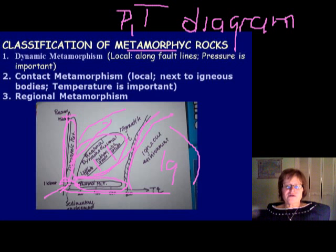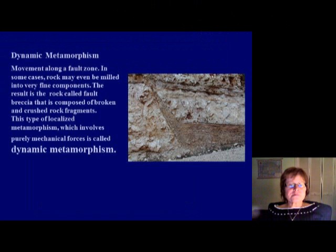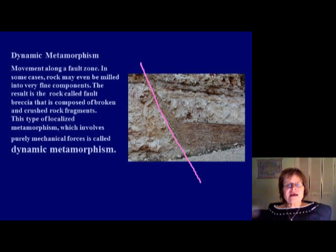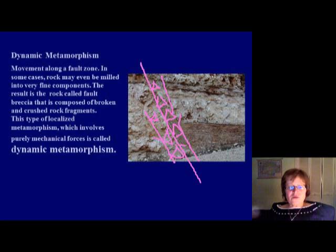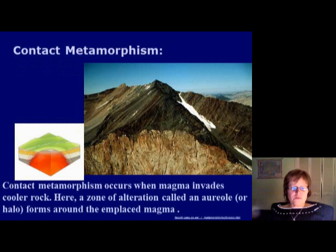Dynamic metamorphism is where only pressure counts; temperature is not important. It usually happens along fault lines, and when there is a big fault it will break the rocks into fragments. This produces very angular rock fragments, and we call this rock fault breccia. It's similar to regular breccia except all the fragments are the same rock type.